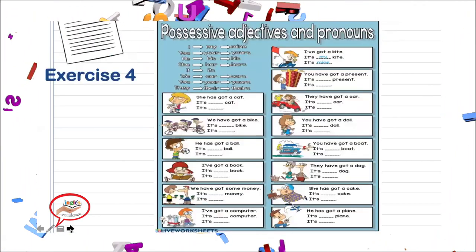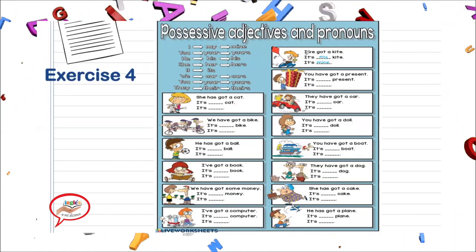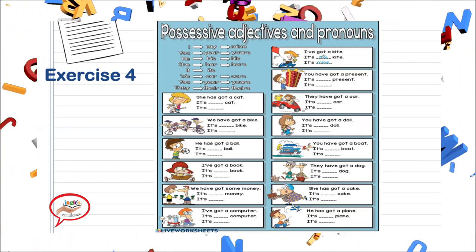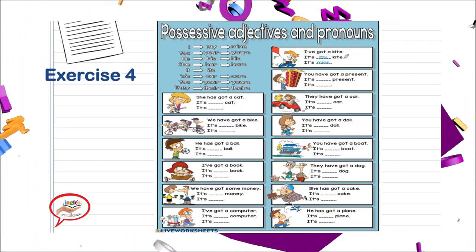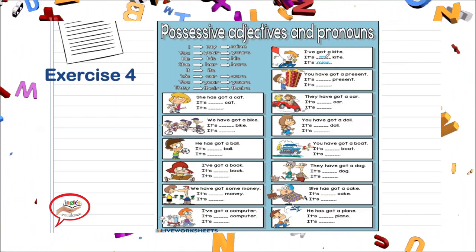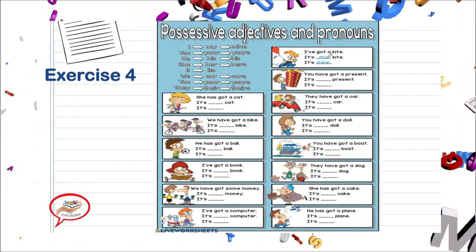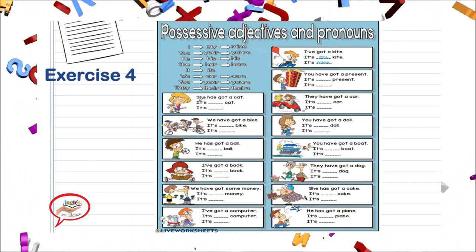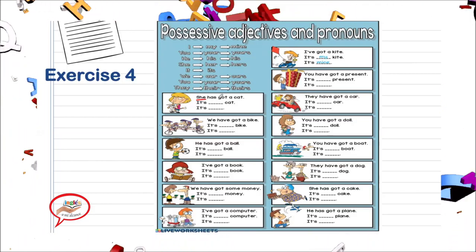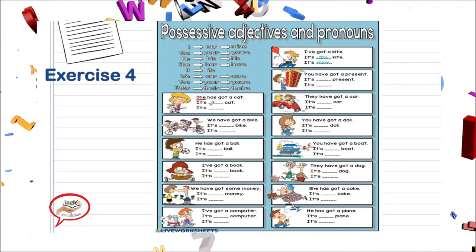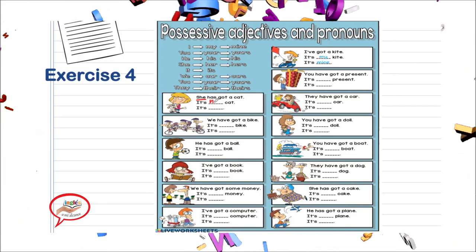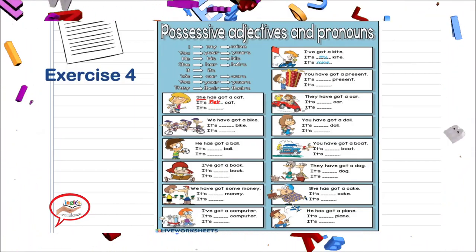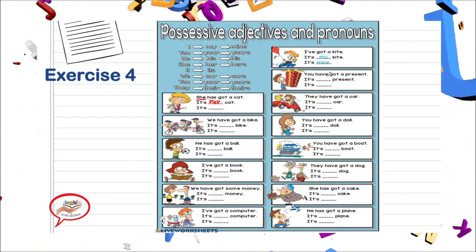Let's see our last exercise. I got a kite — it's my kite, it's mine. En la primera oración escribimos el possessive adjective, y en la segunda el possessive pronoun. She has got a cat — it's her cat. ¿Y cuál va a ser nuestra siguiente oración? It's hers. Very good.